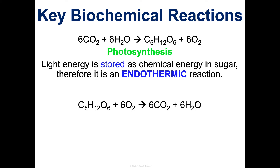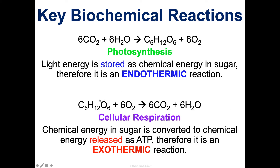The opposite is cellular respiration: one glucose plus six oxygens yields six carbon dioxides, six waters, and a big release of energy. That chemical energy in sugar gets converted to chemical energy released in the form of a molecule called ATP, which we'll learn about next time. The overall reaction is exothermic because the amount of energy needed to break these bonds is less than the amount released when the new bonds are formed.